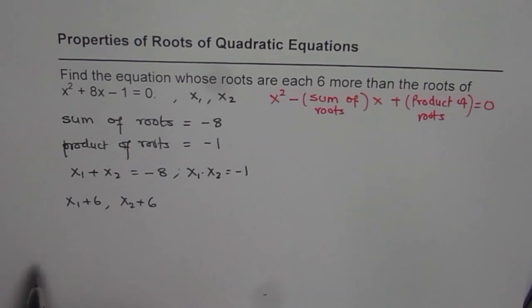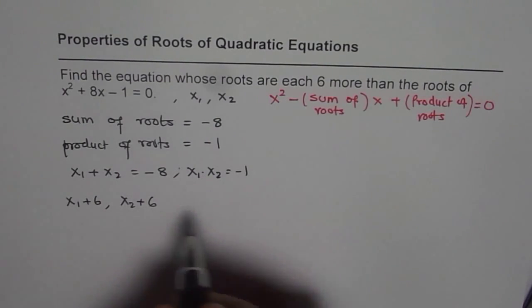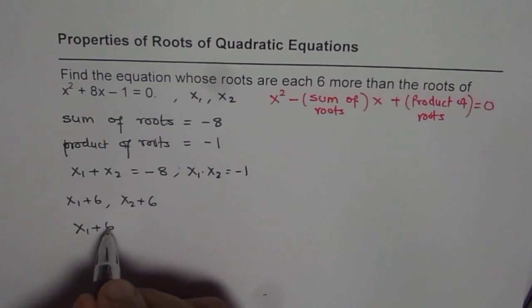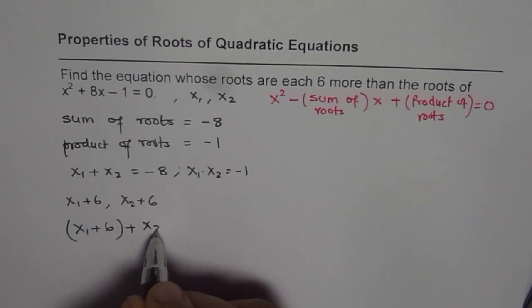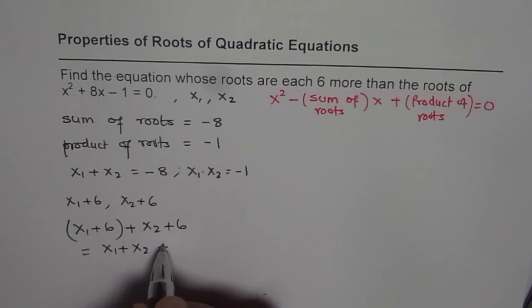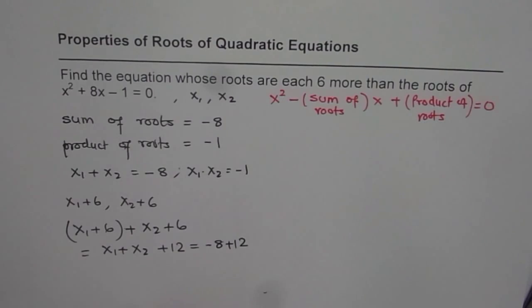Now what is the sum of these two roots? So if I want to add these two, let us do it here itself. Sum of roots will be (x₁ + 6) + (x₂ + 6), and this equals x₁ + x₂ + 12. Now x₁ + x₂ is -8, so we have -8 + 12 and that gives you 4. So we get 4 here.